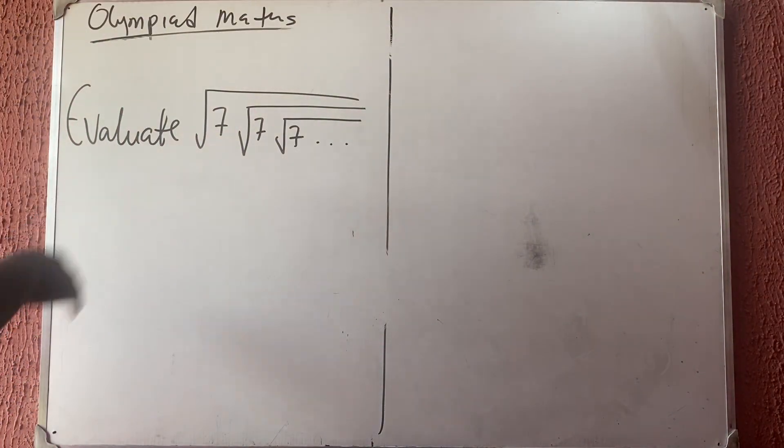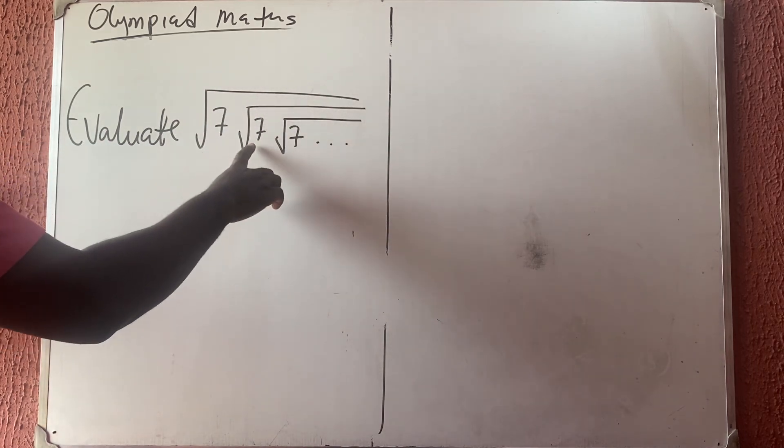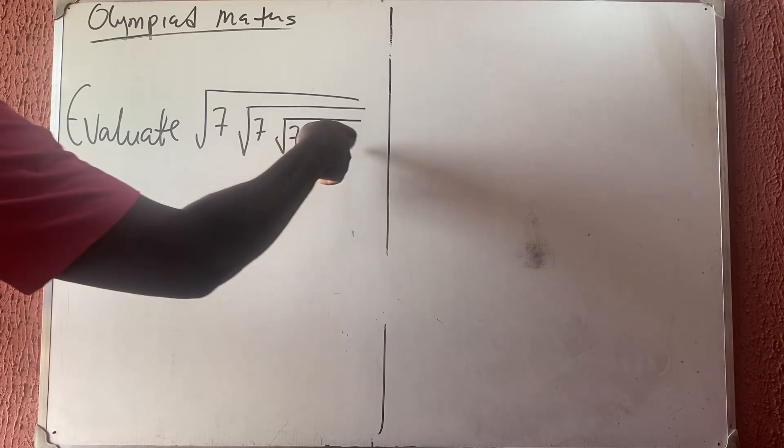Alright, let's quickly solve this simple Olympiad maths problem. We have the square root of 7, and inside it I have square root of 7 again, inside I have square root of 7 again, and it continues like that till infinity. So what is the solution?